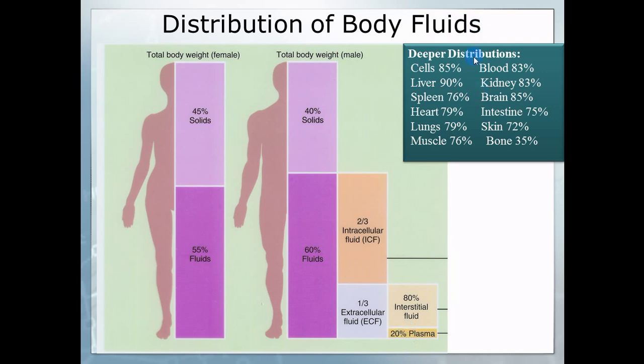If you look deeper into the distribution, one cell by itself is 85% water. Your liver, if pulled out of your body, is 90% water. The brain is about 85% water — so your brain is just a big bag of water and fats, basically. Even bone is 35% water.